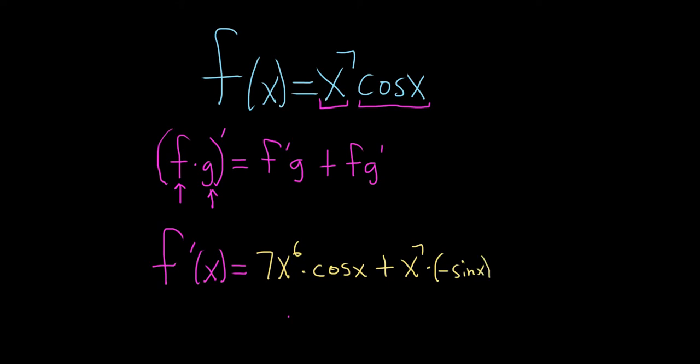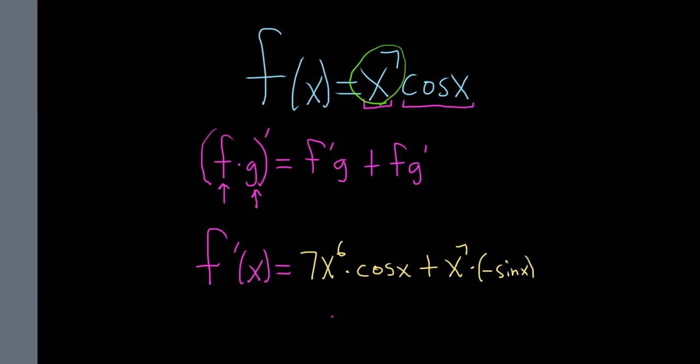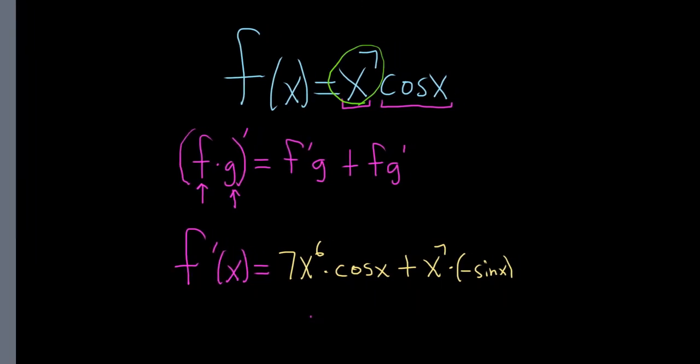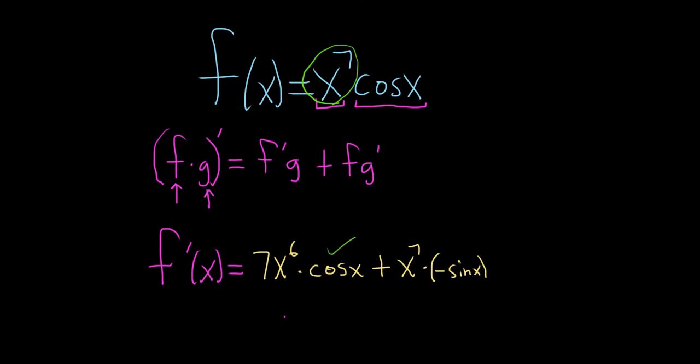Let's go ahead and double-check our work. So it's the derivative of the first, so the derivative of x to the 7th, check, times the second, which is cosine, plus the first, times the derivative of the second. So everything looks okay.